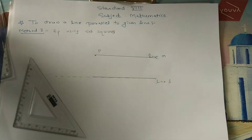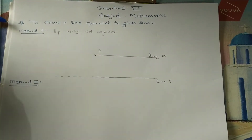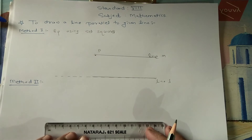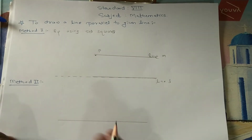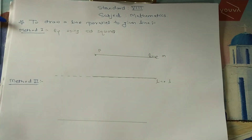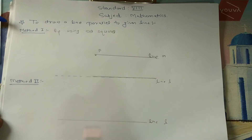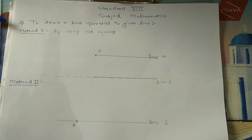One more method is there. What is the second method? Again, I am considering a line here. To this line, again, we have to draw a parallel line. So, for that purpose, suppose this is line L again. You have to consider one point — suppose this is point A. Through this point, you have to draw a perpendicular.